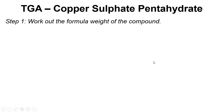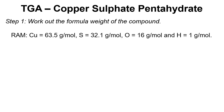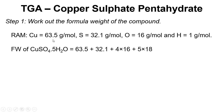We're going to break this down into steps. The first thing we're going to do is work out the formula weight of the compound. Taking these relative atomic masses to one decimal place, the formula weight of copper sulfate pentahydrate is the relative atomic mass of copper plus sulfur plus four lots of oxygen in the sulfate, and then five lots of H₂O to account for the water, and that gives us 249.6 grams per mole.